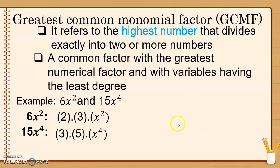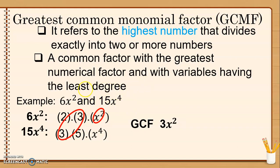Titingnan natin ano yung common sa kanila — number and a variable. So, ang common na number sa kanila ay 3. Then, the variable with the lowest exponent or degree is x squared. So, our GCMF is 3x squared. Tingnan mo — 3x squared can divide both 6x squared and 15x to the power of 4. Yun yung sinasabi na greatest common monomial factor.